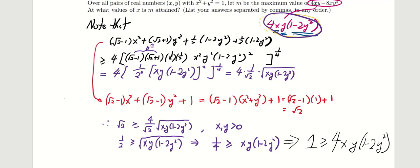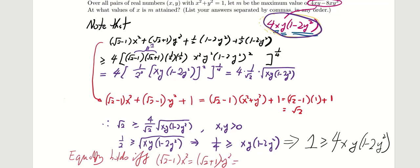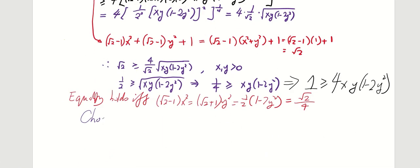Using the AM-GM equality condition, we know that equality holds if and only if all four terms are equal — that is, (sqrt(2) minus 1)x squared equals (sqrt(2) plus 1)y squared equals half(1 minus 2y squared). Since the sum equals sqrt(2) and there are 4 terms, each term equals sqrt(2)/4. There are a few possible solutions; we choose x to be the positive square root of [sqrt(2)/4] divided by (sqrt(2) minus 1).